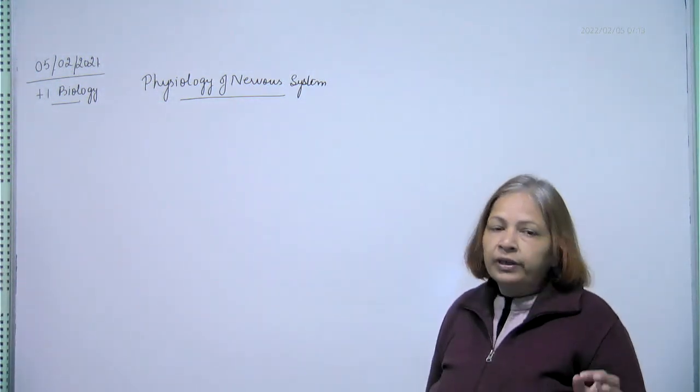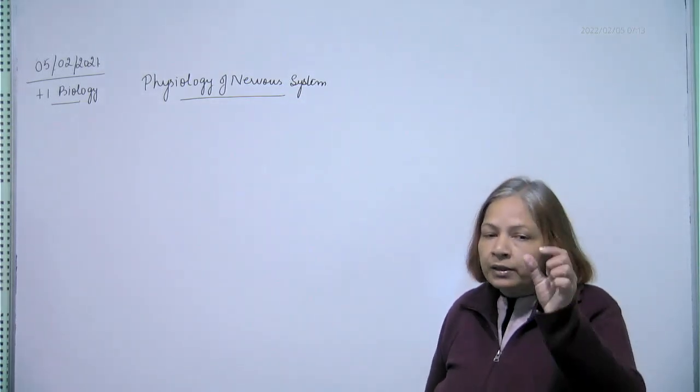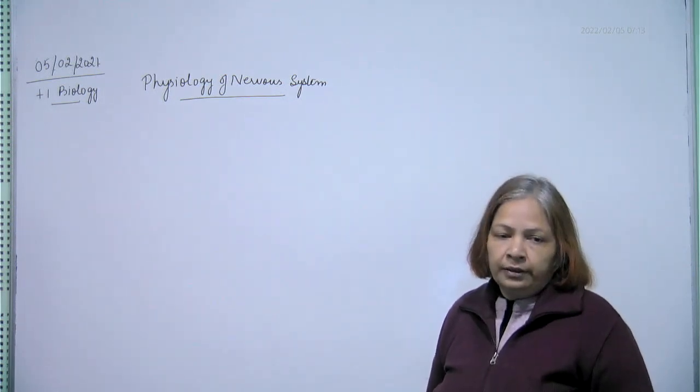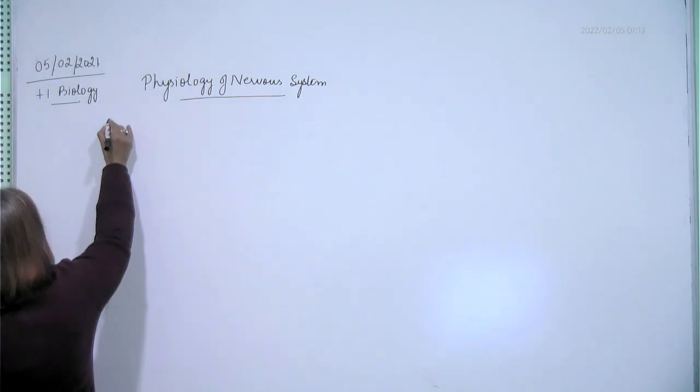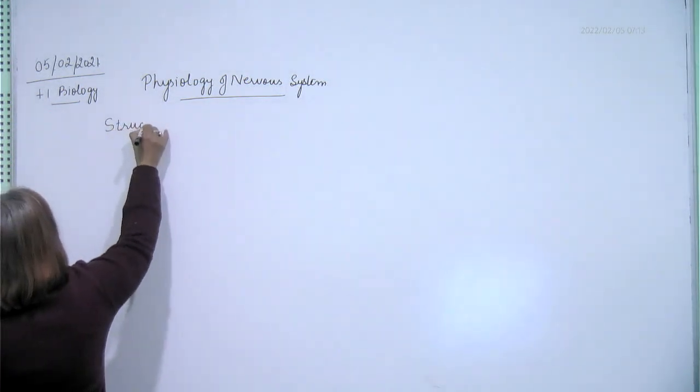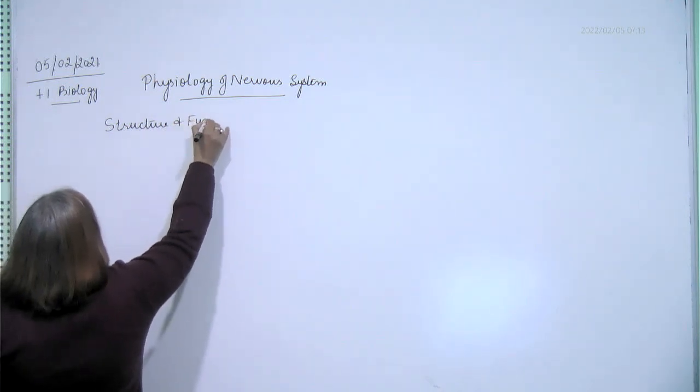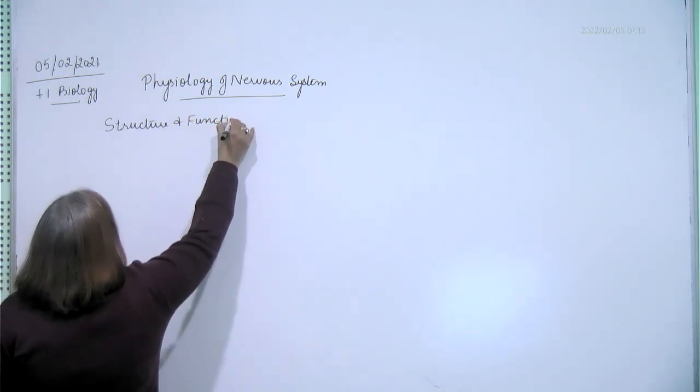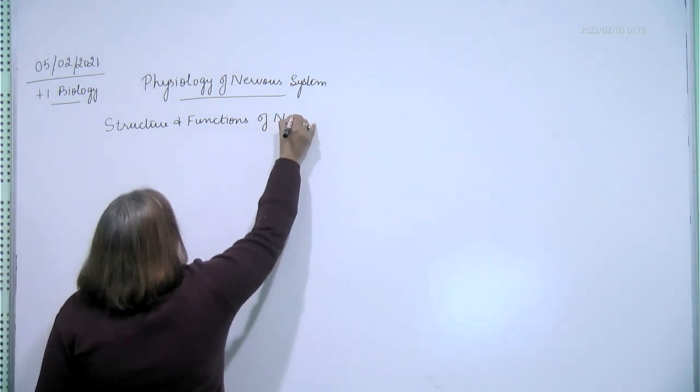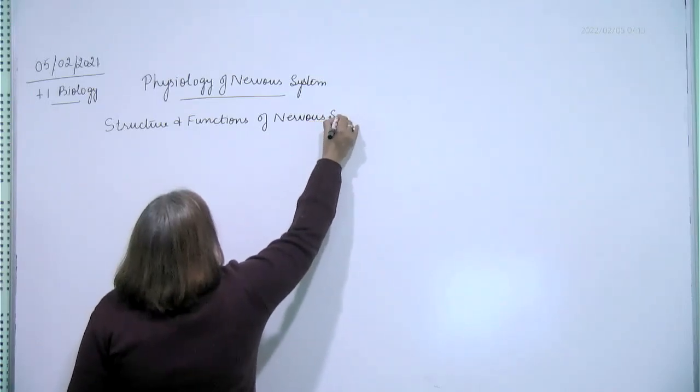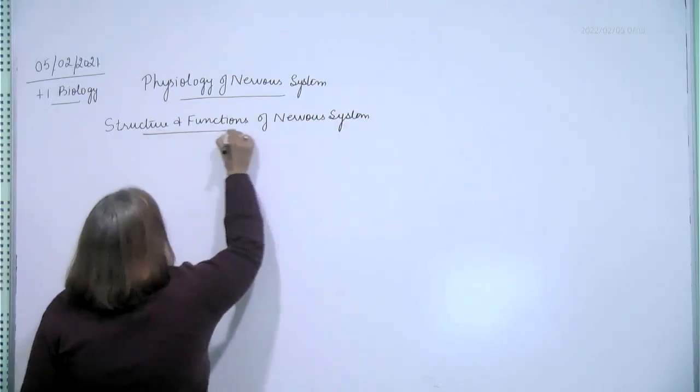We have done conduction of nerve impulse to synapse, conduction of nerve impulse in the axon. So now we will make a structure and broadly what functions of nervous system.